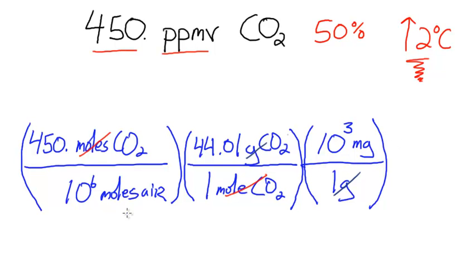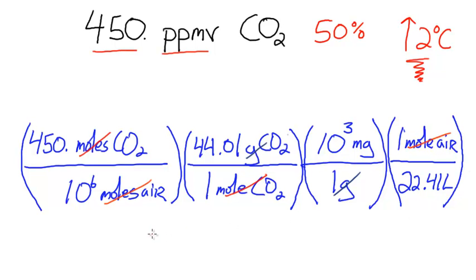And then what I'm going to do is I'm going to convert this moles of air to liters of air, using the molar volume of air at STP, or standard temperature and pressure. And I'm going to do this problem under those conditions. We know that one mole of air at 273.15 Kelvin and one atmosphere has a volume of 22.41 liters. Now I can cancel out my moles of air, and my final answer here should be in milligrams per liter. And if I do my math correctly for this part, I will get 0.884 milligrams of CO2 per one liter of air.